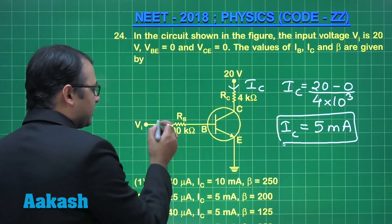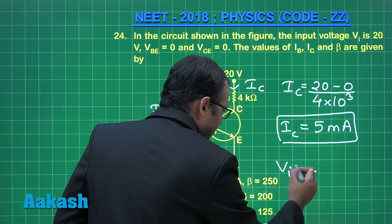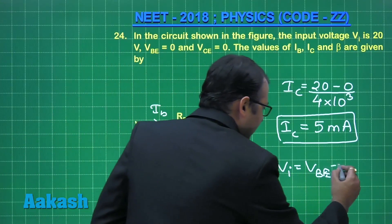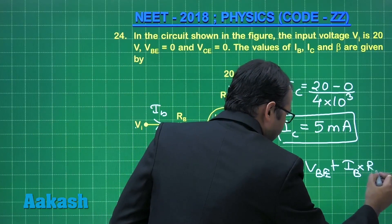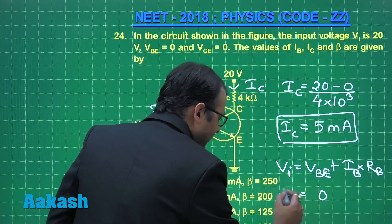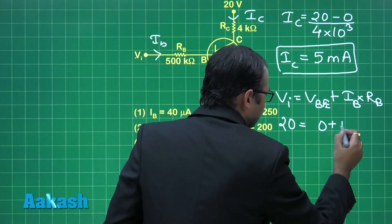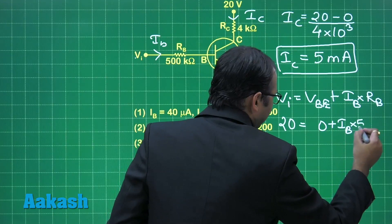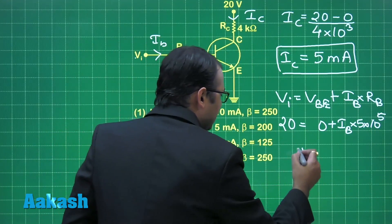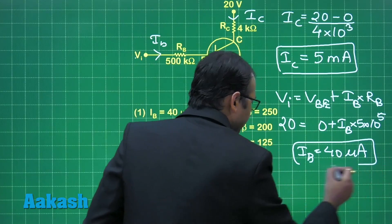Now about IB. IB means base current, which will be here. Now from here to here we have to see. If we write the equation according to Kirchhoff's law, then VI will be first VBE, B to E, then we'll write IB into RB, because this potential drop and this both need to be added. Now VBE is given as 0, put this value, we have 20. What are we given? RB is given as 500 kilo ohm. So I can write instead of IB into 500 kilo ohm, 5 into 10 to the power 5. So from here if I solve for the value of IB, it comes to 40 microampere.